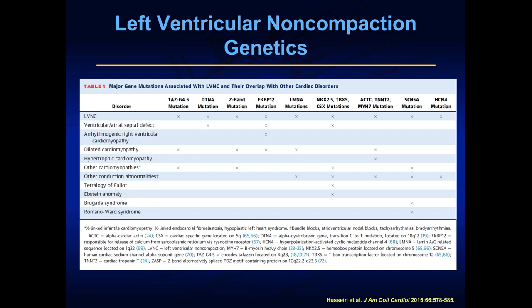Question about whether patients can go through adulthood with LVNC and be asymptomatic: absolutely — that's a large number of patients. Some patients even in their 80s have normal heart squeeze, normal heart size, and no heart rhythm abnormalities. Question about differentiating LVNC from athlete's heart: MRI would be a nice way — non-compaction would be very evident. Athlete's heart is more of a thickened heart muscle, so the typical question is hypertrophic cardiomyopathy versus athlete's heart, not LVNC. Deconditioning those patients for three months — if the heart muscle thins, it's athlete's heart; if it doesn't, it's likely genetic hypertrophic cardiomyopathy.